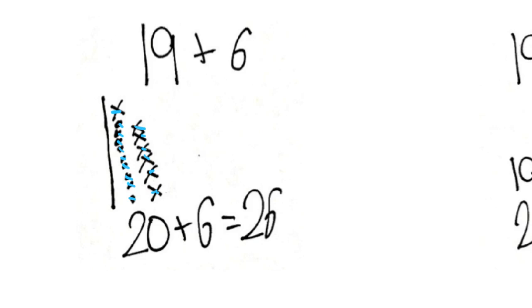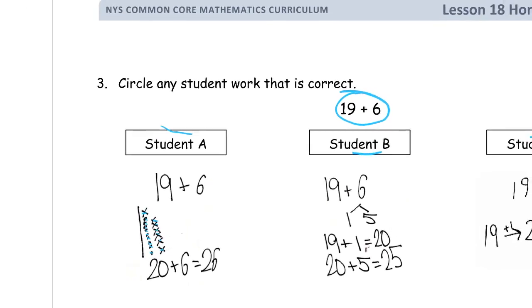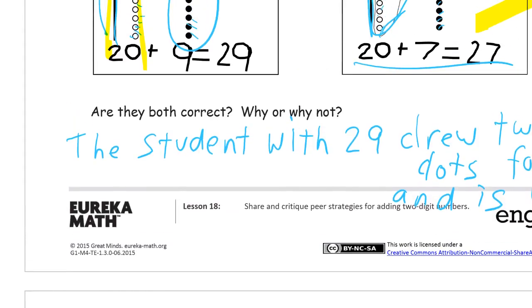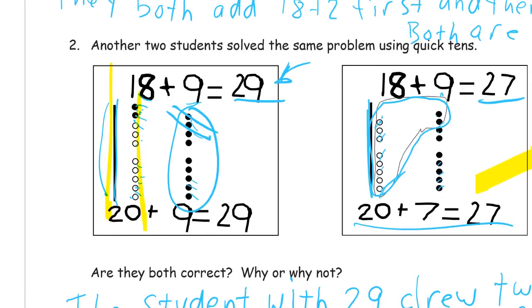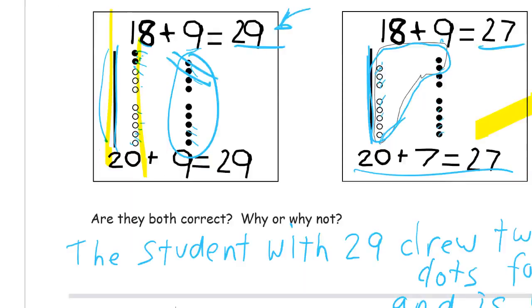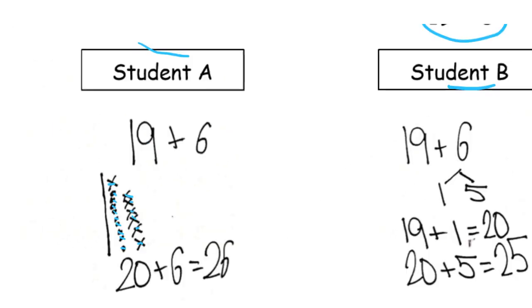It's the same mistake that the other student made up here on the first page. He drew part of that addend to finish the 10, but then counted the same part of that number again when he drew it. You can see this in the number sentences here. Here's the 19 plus 6 and he rewrote it as 20 plus 6.